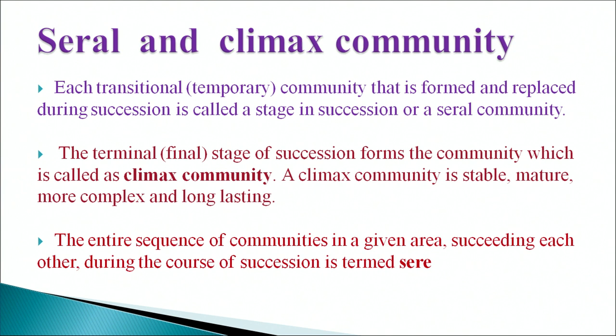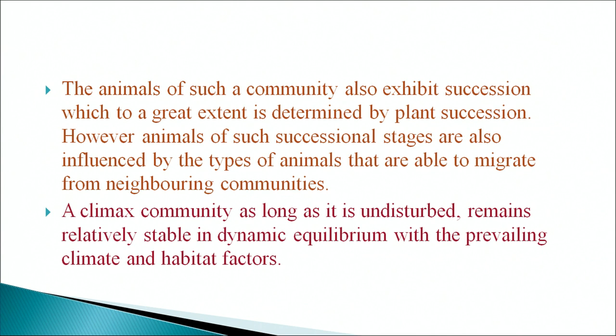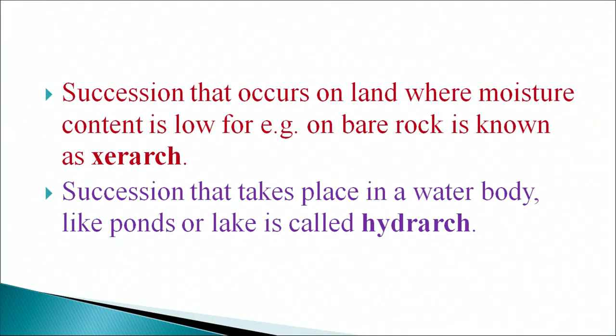The terminal or final stage of succession forms a community called the climax community, which is stable, mature, more complex and long-lasting. The entire sequence of communities succeeding each other during succession is termed a sere. Animals also exhibit succession, largely determined by plant succession and influenced by types of animals migrating from neighboring communities. A climax community, as long as it is undisturbed, remains relatively stable in dynamic equilibrium with the prevailing climate and habitat factors. Succession on land with low moisture content (e.g., bare rock) is called xerarch; succession in a water body like ponds or lakes is called hydrarch.